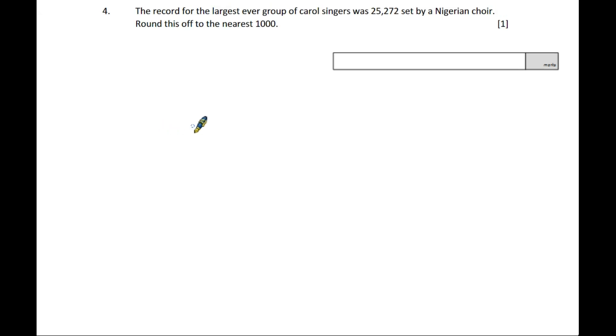Question four: The record for the largest group of carol singers was 25,272 set by a Nigerian choir. Round this to the nearest thousand. The thousand column is the five. The next number is two, which is below five, so we disregard it. The answer stays at 25,000.